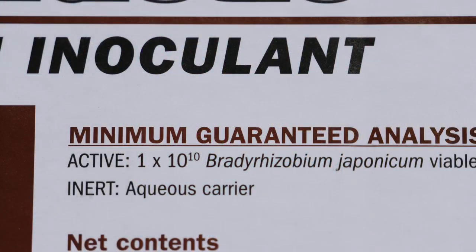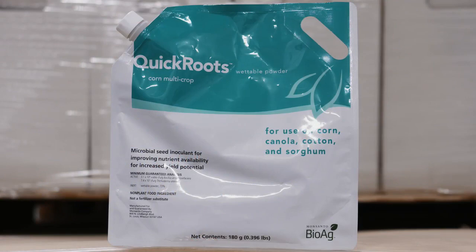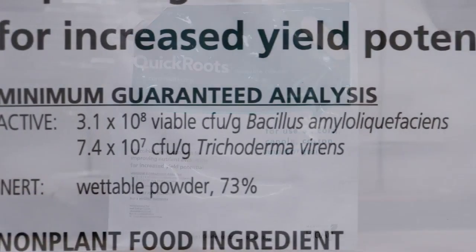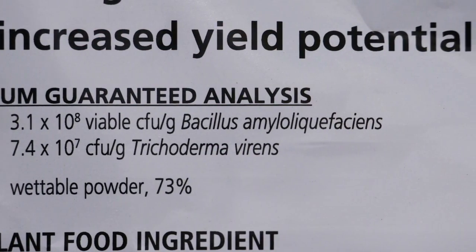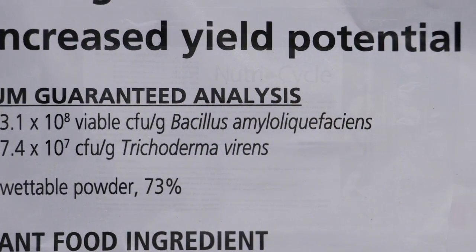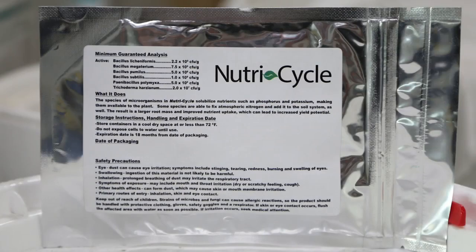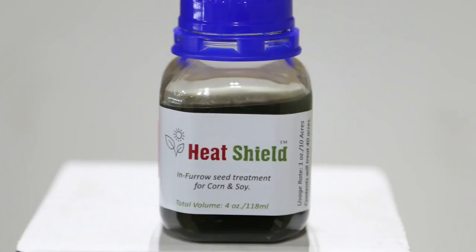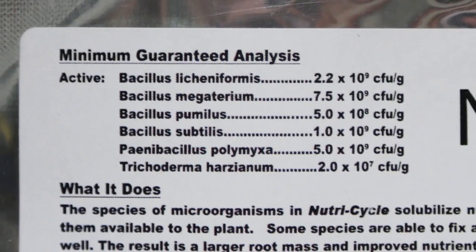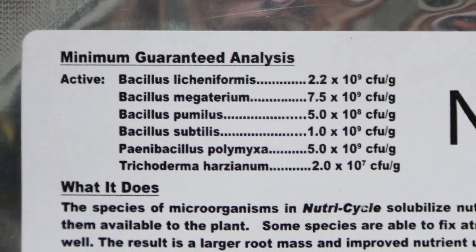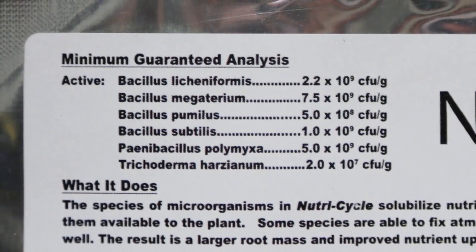We've also used Quick Roots a lot on our farm — we've talked about it here on the show. It's beneficial bacteria and fungi. We've used products like Nutri-Cycle and Heat-Shield. There are many different biological, or as I'd call them natural, products that are now getting used in agriculture today.